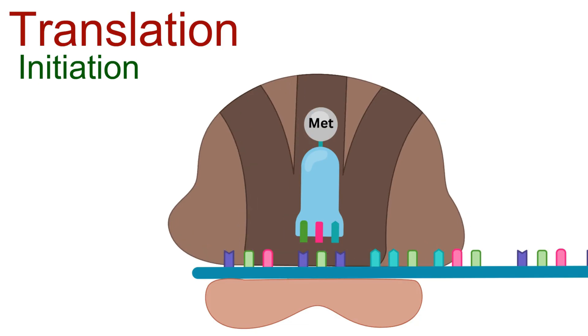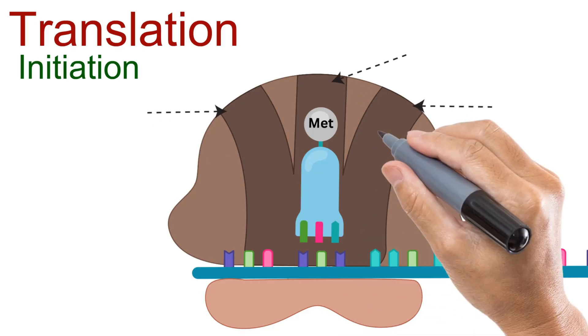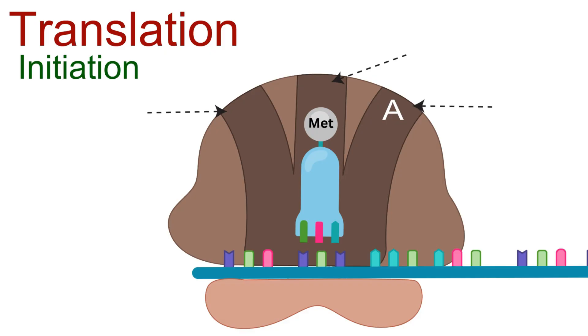The large ribosomal subunit then joins the complex, forming a complete ribosome. This structure now has three important sites that control the flow of translation. First, A site or aminoacyl site, the entry point where each new transfer RNA carrying an amino acid arrives.